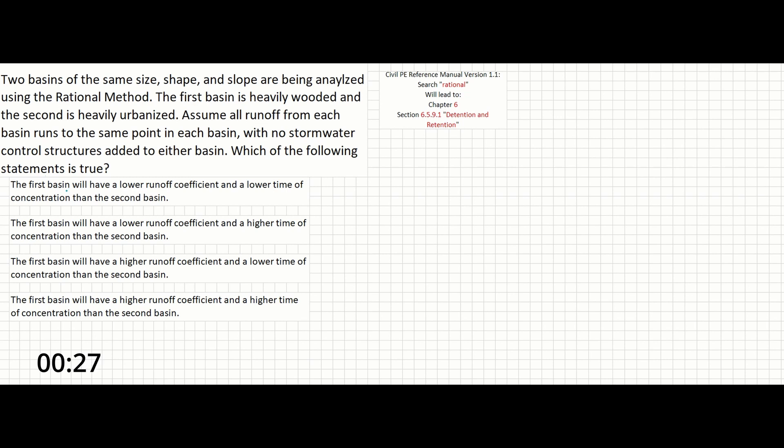The first basin will have a lower runoff coefficient and a lower time of concentration than the second basin. The first basin will have a lower runoff coefficient and a higher time of concentration than the second basin. The first basin will have a higher runoff coefficient and a lower time of concentration than the second basin. The first basin will have a higher runoff coefficient and a higher time of concentration than the second basin.